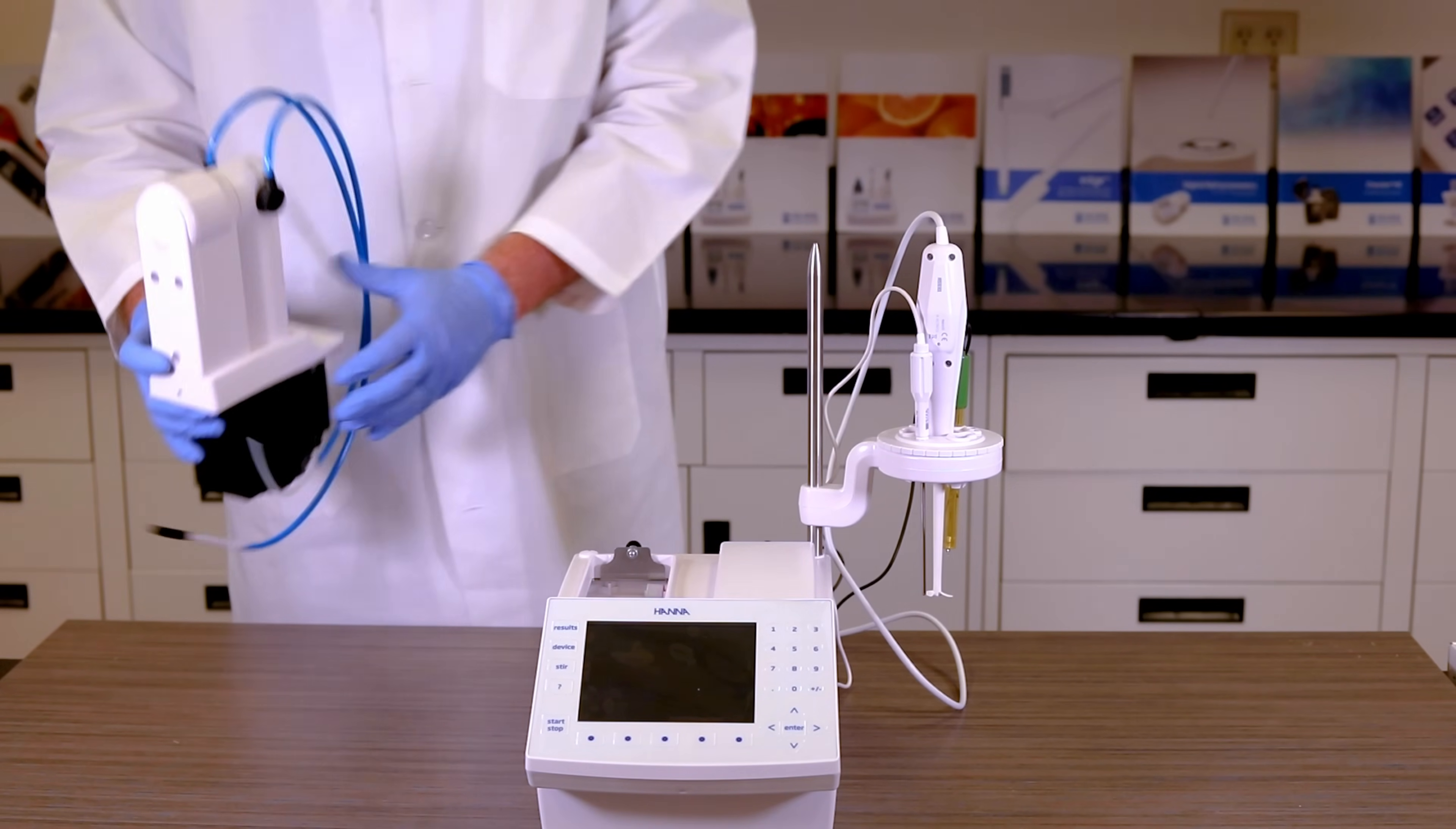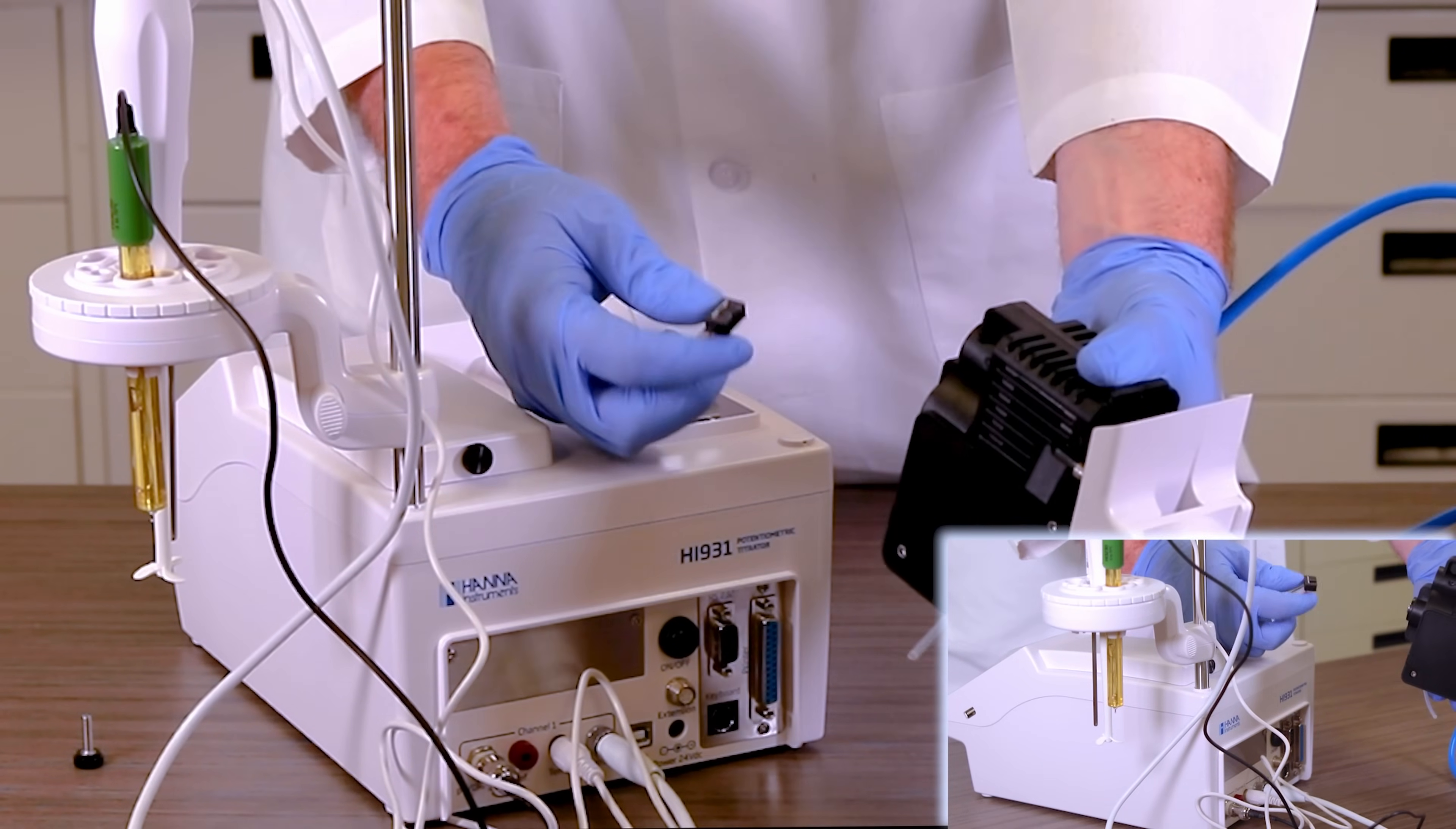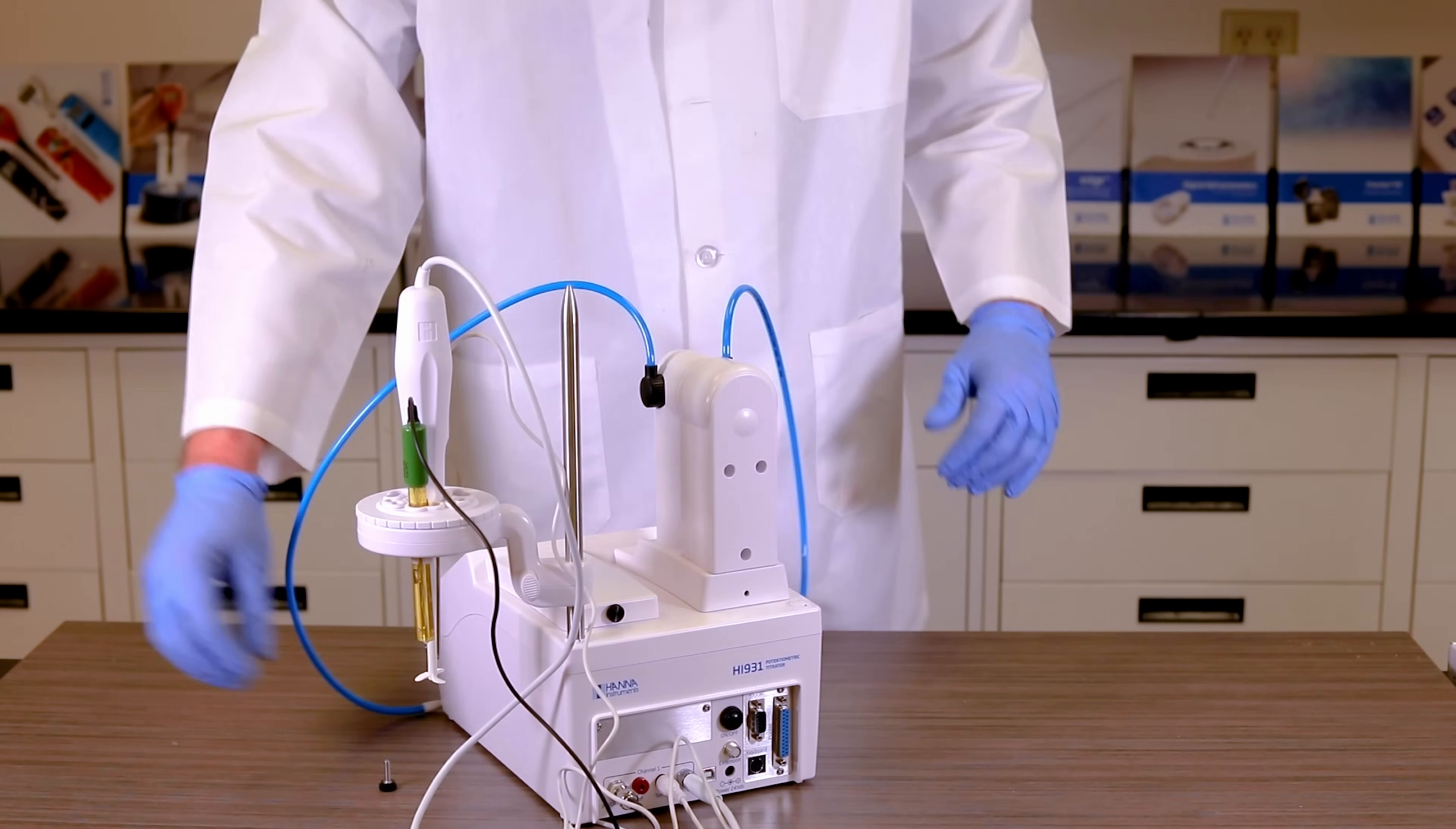Locate the pump assembly. Unscrew the pump cover and attach the ribbon cable to the pump. Set the pump into the well and tighten the screw located behind the pump.